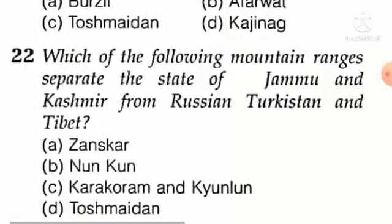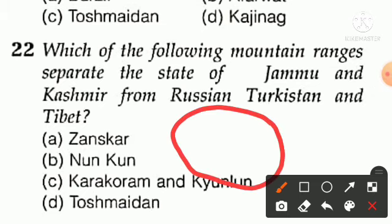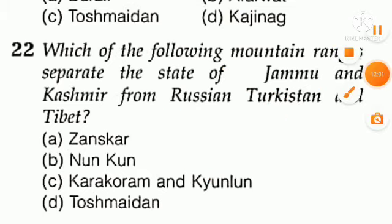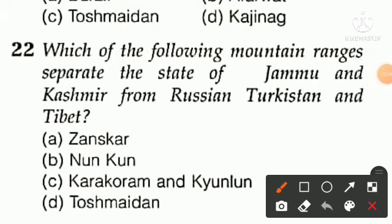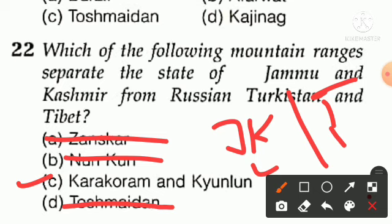Question number twenty-two: which mountain range separates the state of Jammu and Kashmir from Xinjiang (Ration Turkistan) and Tibet? Option A — Zanskar, option B — Nunkun, option C — Karakoram and Kunlun, option D — Tosh Madan. The answer is option C — Karakoram and Kunlun separate J&K and Ladakh from Tibet.